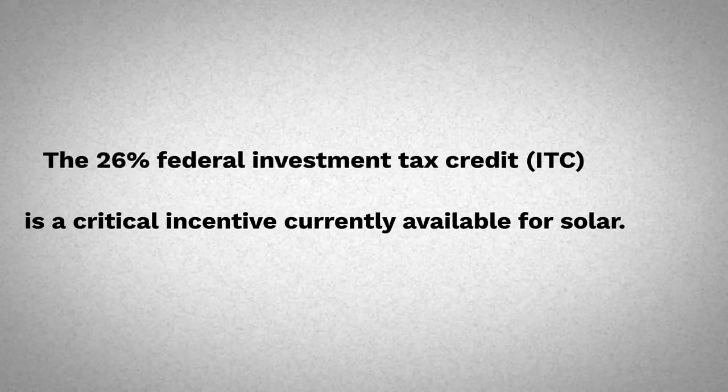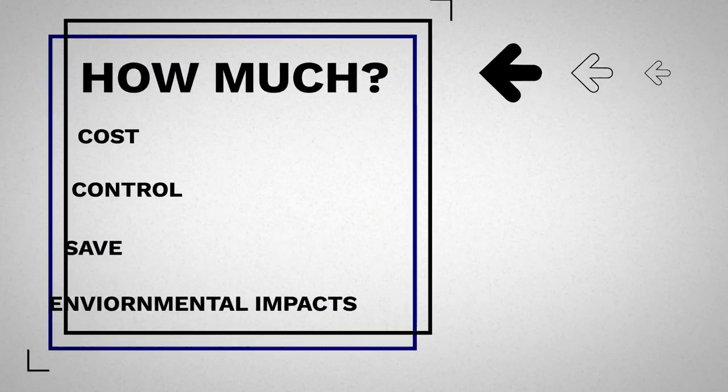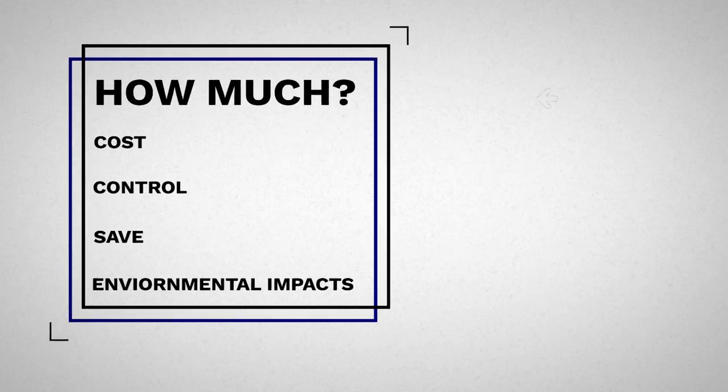First and foremost, you have to show the investment tax credit. At the time of this recording, the investment tax credit is 26%, meaning 26% of the solar system is covered by a federal tax benefit — it's like the IRS giving you a gift card worth 26% of the system cost. Then there's bonus depreciation, which is a cash benefit. Instead of taking it over a 25-year period, you could do it over seven years, or take advantage of bonus depreciation in year one and get it all upfront. The customer is going to want to know: how much will this cost, how much will I control my operational expenses, how much will I save in tax benefits, and what are the environmental impacts?